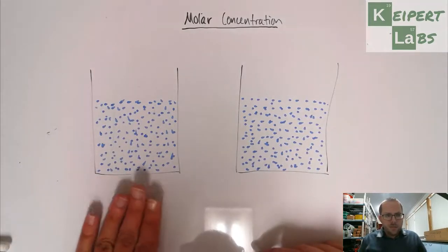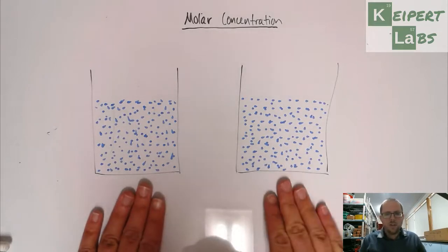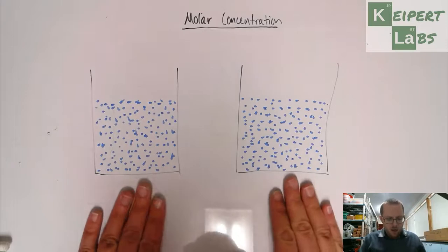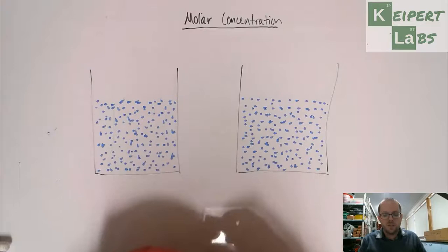So if this represents the beaker we had on the left, the pale beaker, and this represents the beaker that we had on the right, which was the darker colored beaker, I'm going to use little red colored buttons to represent the particles of potassium manganate that dissolved.